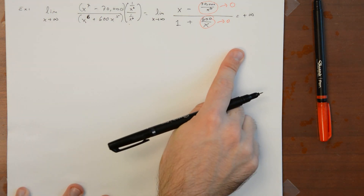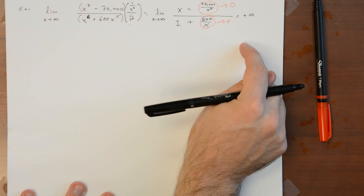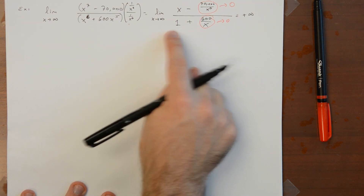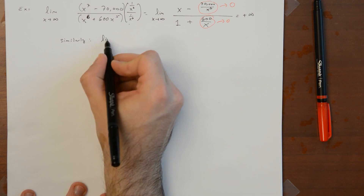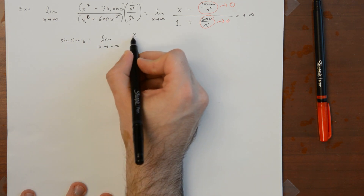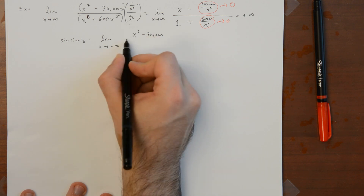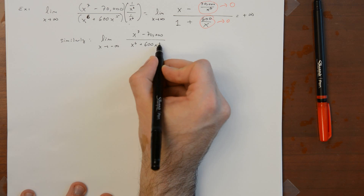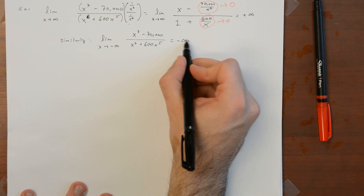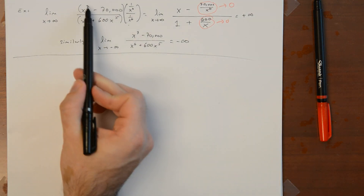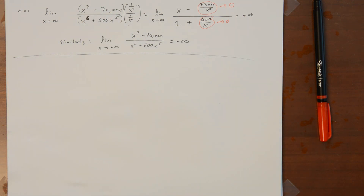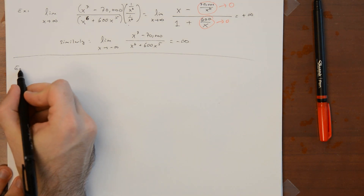Likewise, as x goes to negative infinity, we would get negative infinity, because the x term in the numerator would be going to negative infinity, and dividing by 1 doesn't change the sign. So the limit as x goes to negative infinity of this function goes to negative infinity. This is what should happen whenever the power of x in the numerator is bigger — it outruns the denominator and blows up to positive or negative infinity depending on the sign.